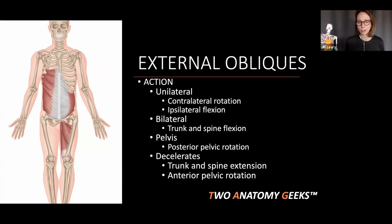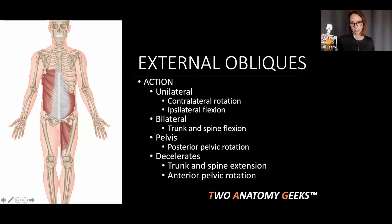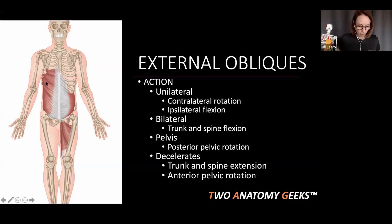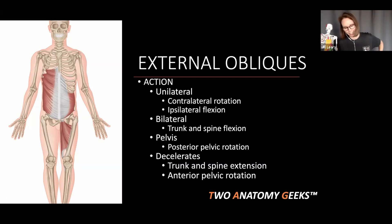So what does the external oblique do? You've got a right and a left external oblique. Bilaterally — meaning both sides working at the same time — the right and left external oblique contracting together produce trunk and spine flexion, that bending forward kind of action.